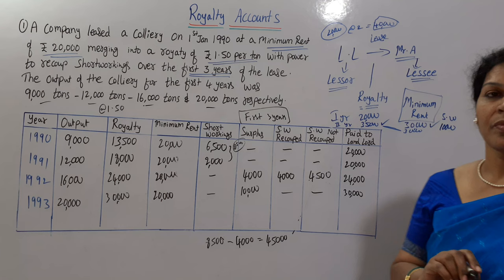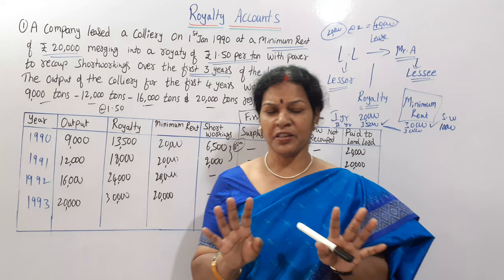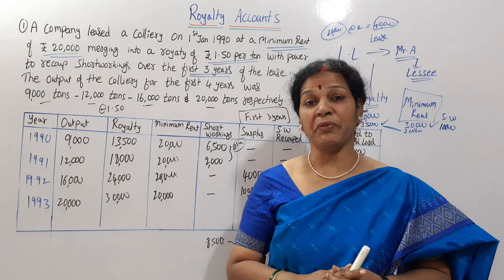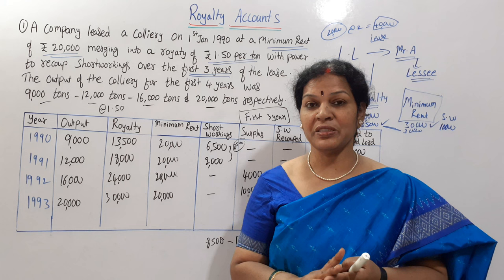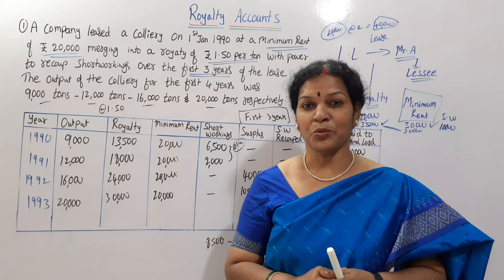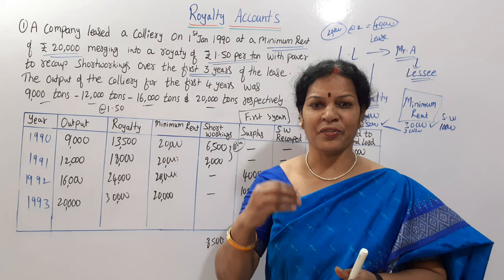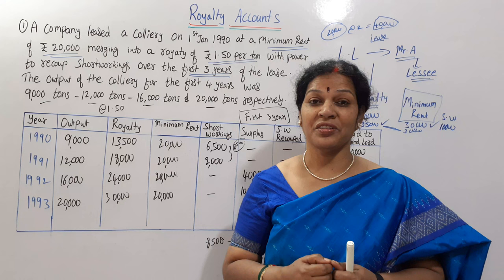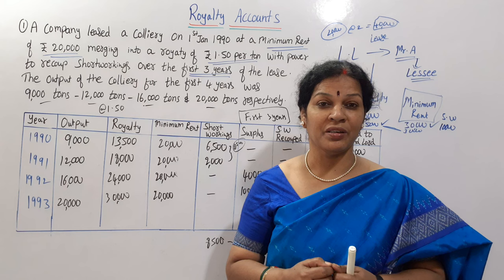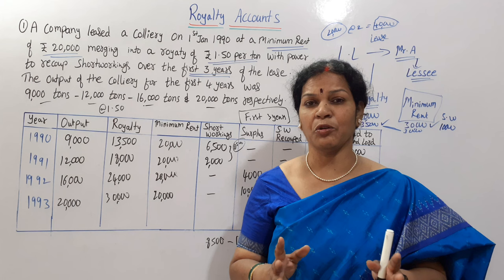This is the introductory class on royalty accounts. If you understand this table, the coming classes on journal entries and ledger accounts will be very easy. We will also see different problems. Please mention your doubts in the comment box. Check out the playlist — there are many subjects already covered. Forward this to your friends, especially poor students who cannot afford high tuition fees. That is the reason I opened this channel. Please share it, study well, and have a bright career. See you in the next class — good luck!